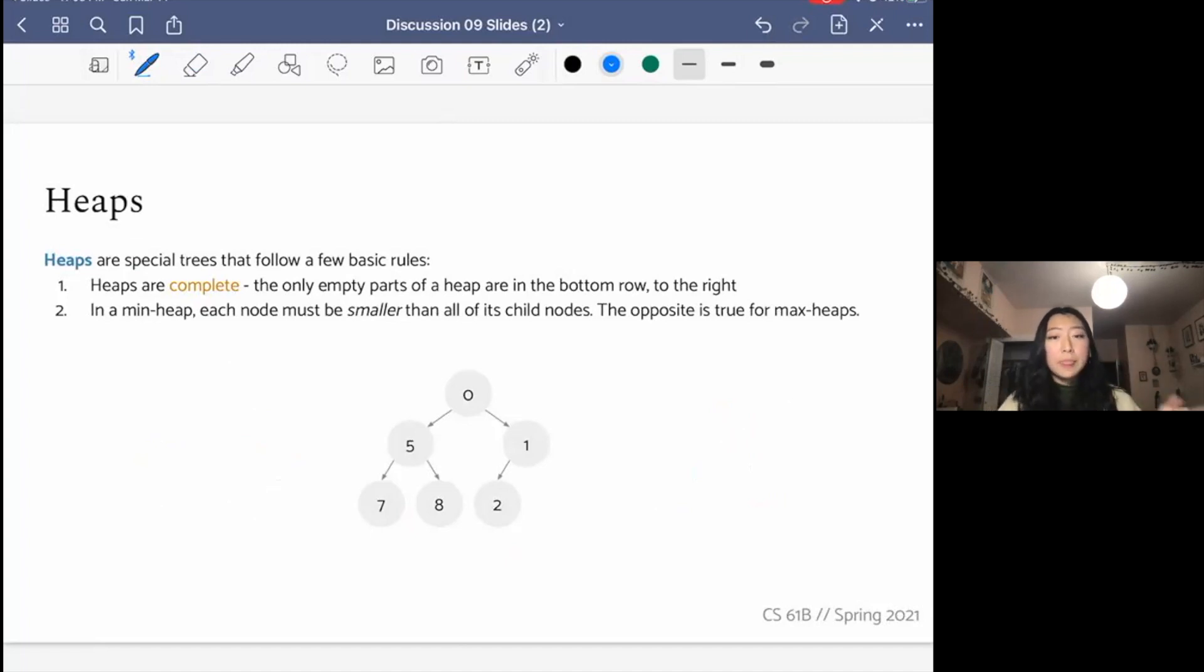For a min heap, each node must be smaller than all of its child nodes. And the opposite is true for max heaps. This picture below shows a min heap. So here, 0 is less than every other node in the tree. 0 is less than 1, 2, 5, 8, 7. If we look at this subtree, we're going to see that also 5 is less than its child nodes, 7 and 8. And 1 is less than its child node 2. And so that is the min heap property. For a max heap, it would just be the opposite, that the biggest number has to be on top. And that is heaps.